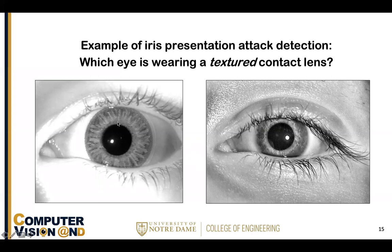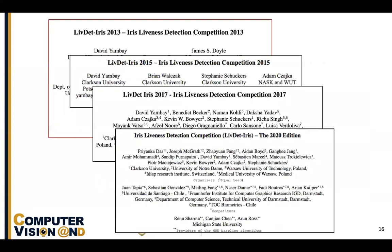So if I were expelled from the United Arab Emirates without wearing a textured contact lens and came back to cross the border wearing one, if the system didn't detect that I was wearing a textured contact lens, I could pass through because I would not match my enrollment on the watch list.